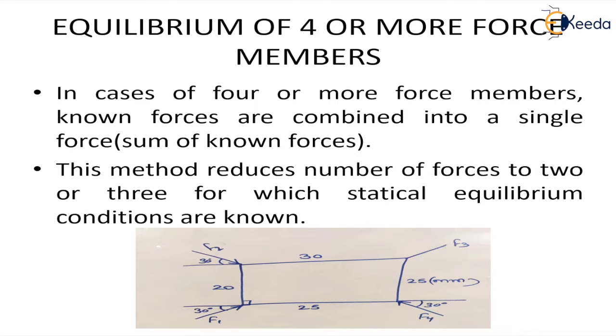So we can see an example—a four force member in which f1, f2, f3, and f4 are given, and we are also given the dimensions of all sides of the rectangle. In this case, let's assume that f1 and f4 are known forces and we do not know the value of f2 and f3.